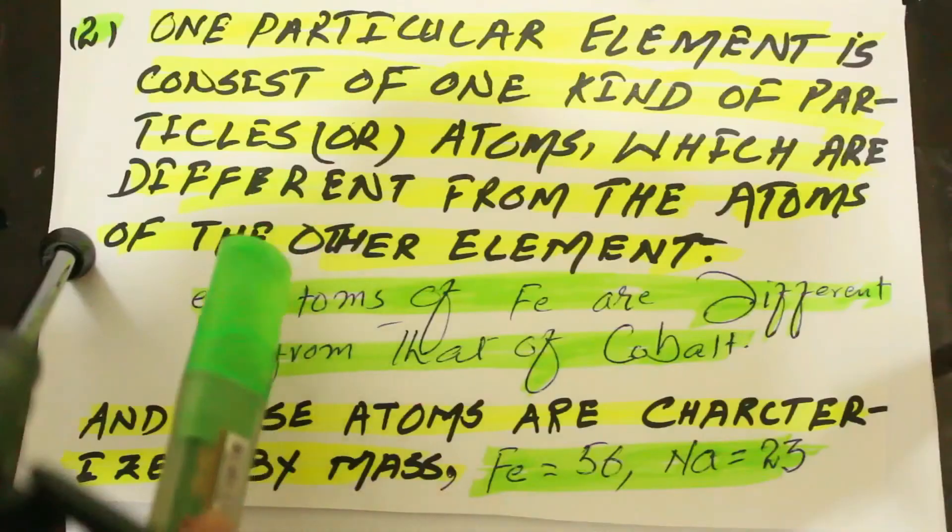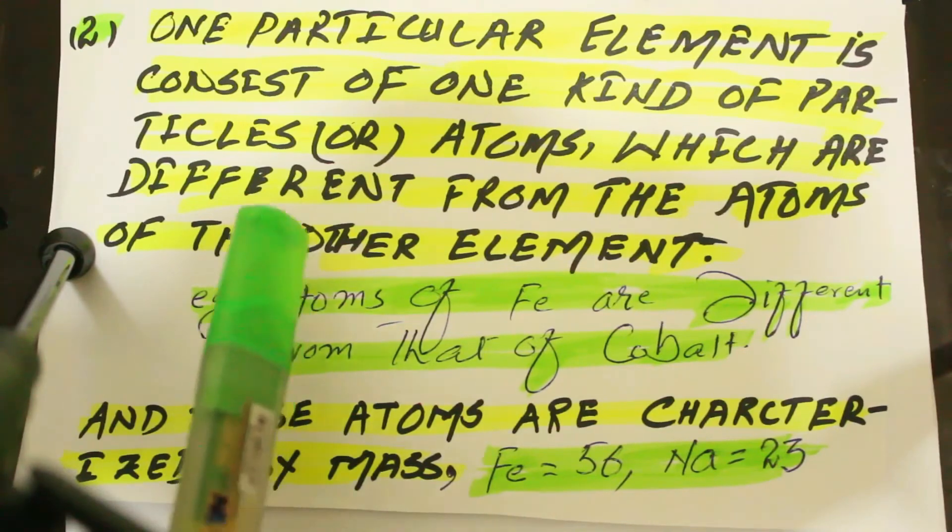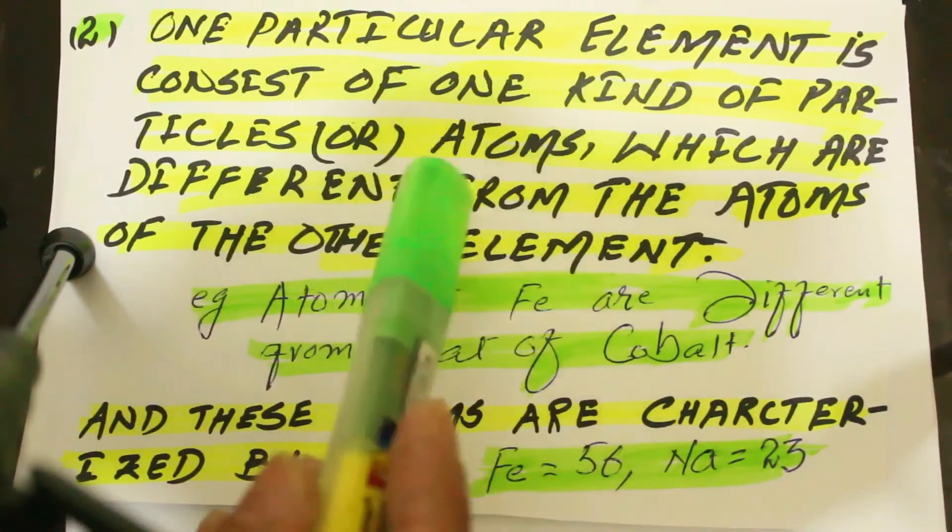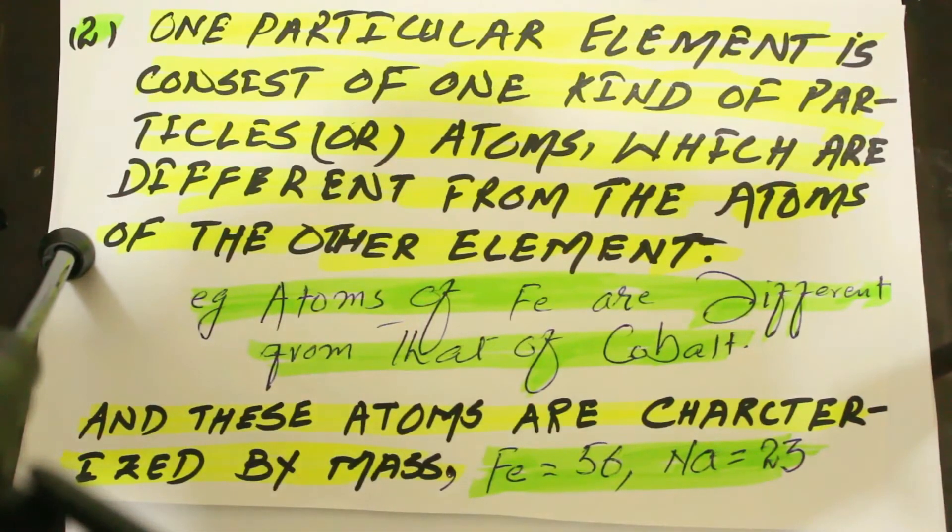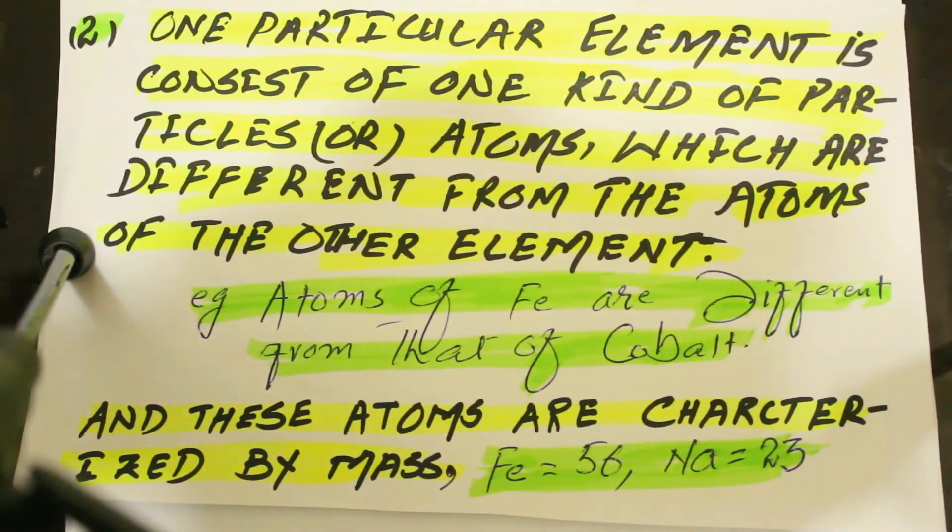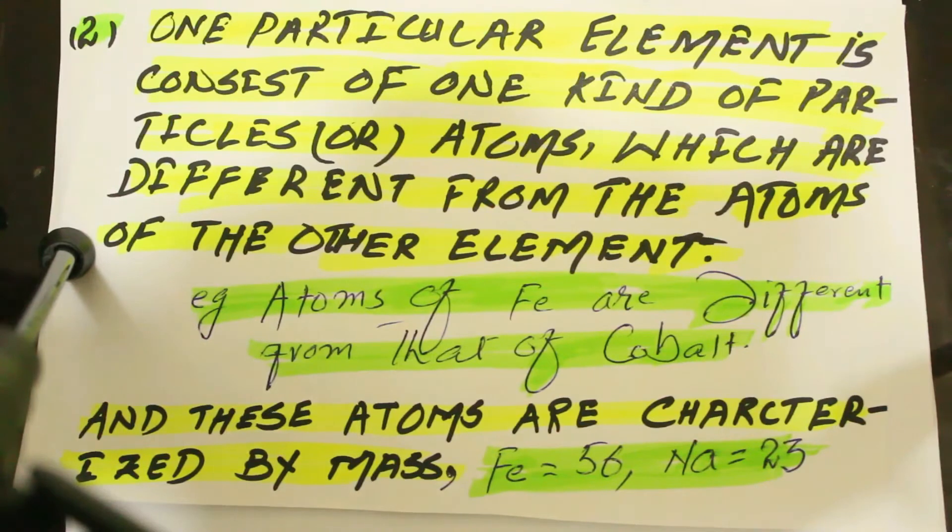The second important point of Dalton's Atomic Theory is that an element is composed of only one kind of particle. These particles are exactly similar to each other, but if we compare them with the atoms of another element, they will be exactly different from each other because the two different elements are characterized by two different atomic masses.